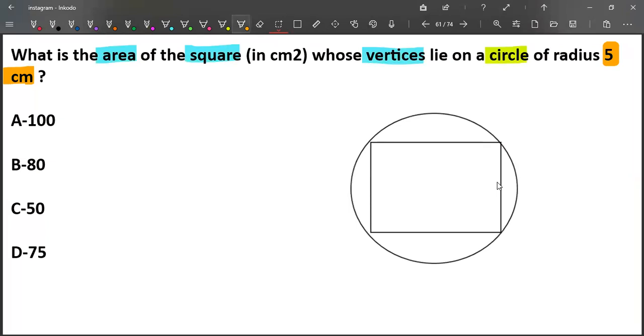They are told that the radius of the square is 5. From center to this, it is 5. If it is 5, from here to here also, it is 5. This is nothing but the diameter of that particular square.